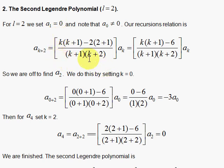So we are ready to go define a sub 2, and we do that by setting k equal to 0. And when k is equal to 0, we have here 0 minus, and this is the minus 6. So k is equal to 0, you simply have the minus 6. And k is equal to 0, we have the 1 times 2. So we have minus 3 a sub 0.